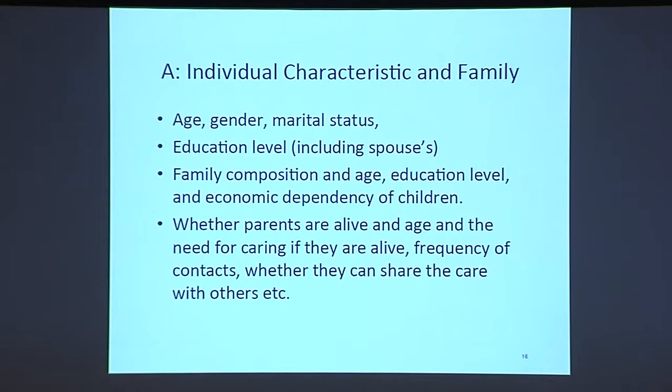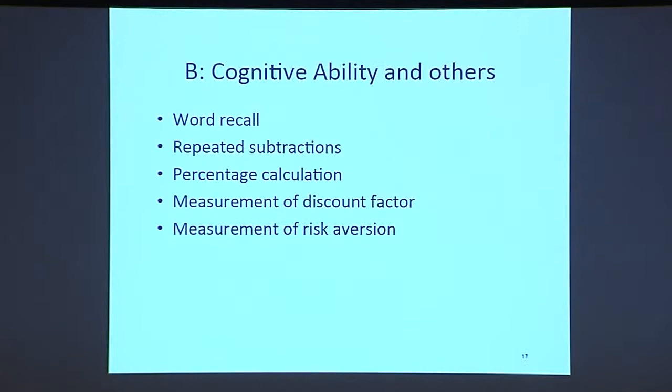Section A contains age, gender, marital status, and education level including spouse's education, family composition, age, education level, and economic dependency of children. It also covers whether parents are alive and their age, need for caring if they are alive, frequency of contacts, and whether the respondent can share care with others.